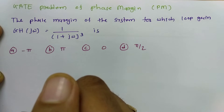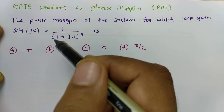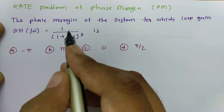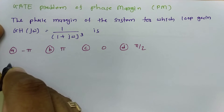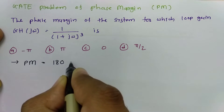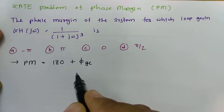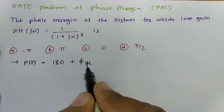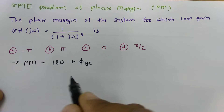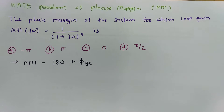We are required to calculate the phase margin. I will be solving this example step by step, so you should see the complete process. The phase margin is defined as 180 degrees plus the phase at the gain crossover frequency. First, we need to calculate the phase at the gain crossover frequency.